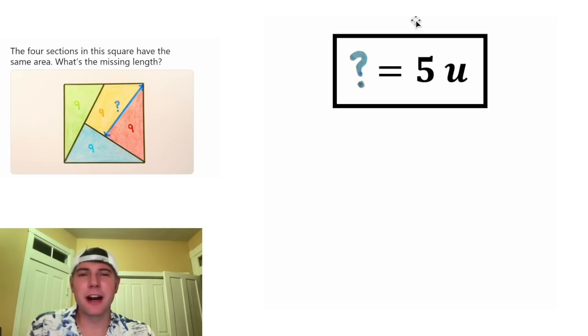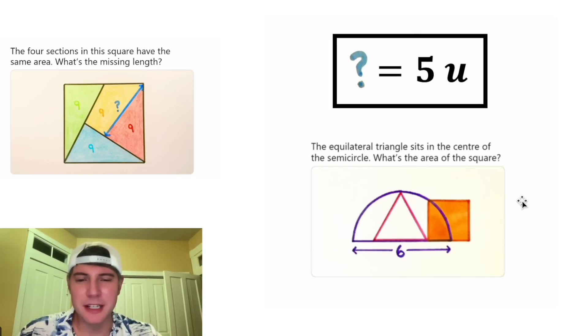This was day 6 of our Advent calendar. This is going to be day 7. I have not looked at this yet. The equilateral triangle sits in the center of the semicircle. What's the area of the square? I'm not sure right now, but there's got to be enough information here to solve it. How exciting.